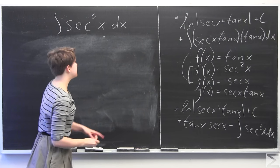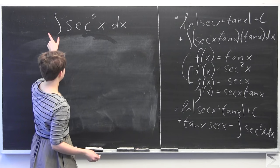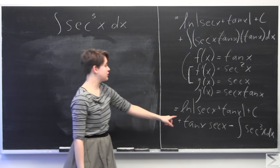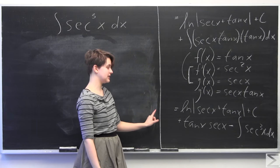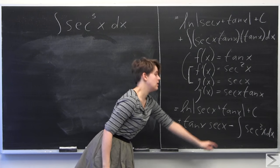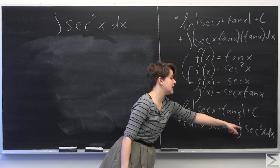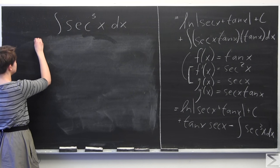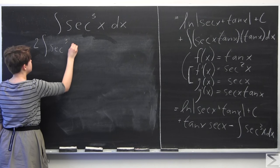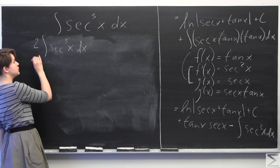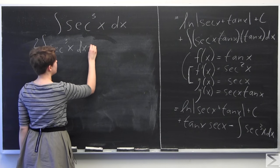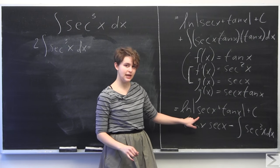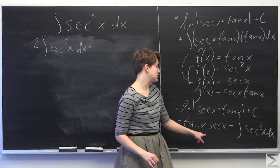Notice that all along we were solving for the integral of secant cubed of x dx. Right now we have a secant cubed of x dx on the left side, but we also have one on the right side. So I'm going to add the integral of secant cubed of x dx to both sides to simplify. Now we have two times the integral of secant cubed of x dx on the left, which equals ln of the absolute value of secant of x plus tangent of x, plus c, plus tangent of x times secant of x.